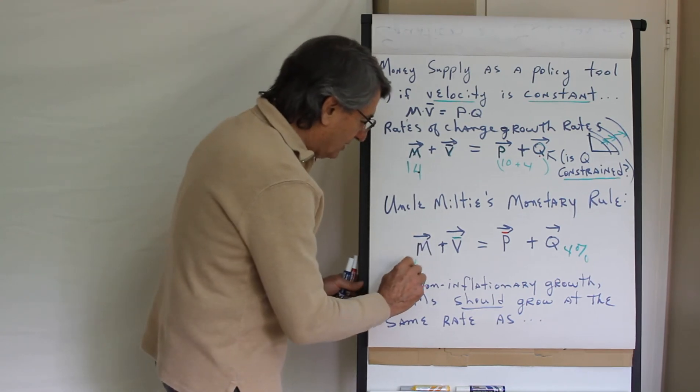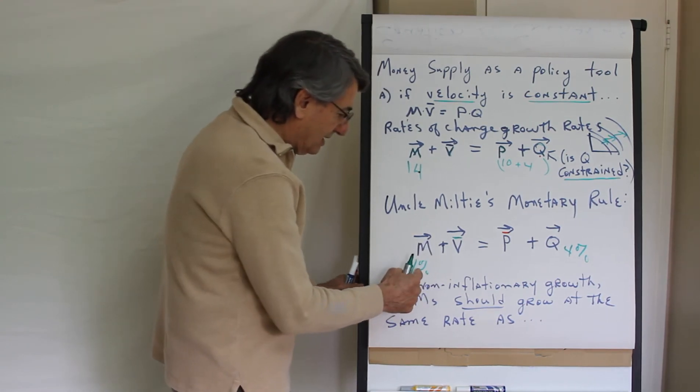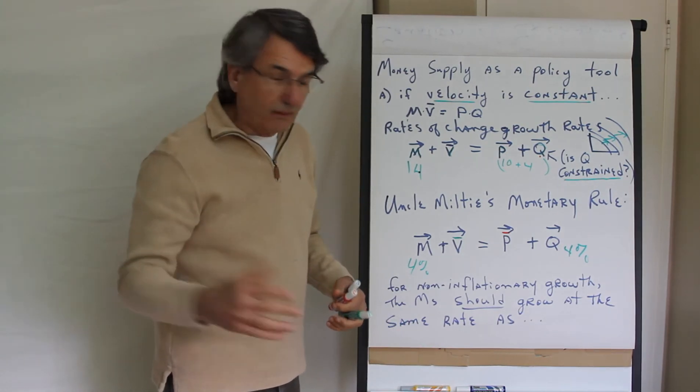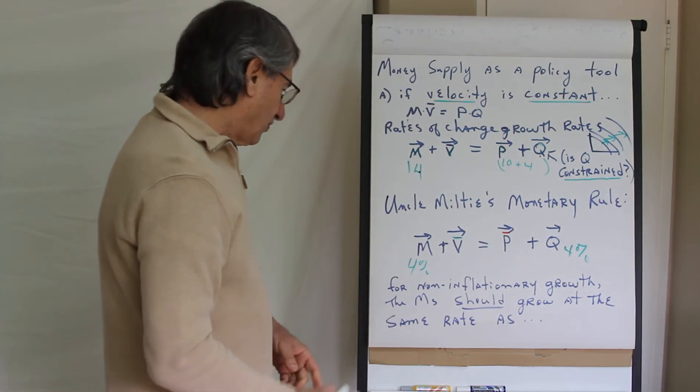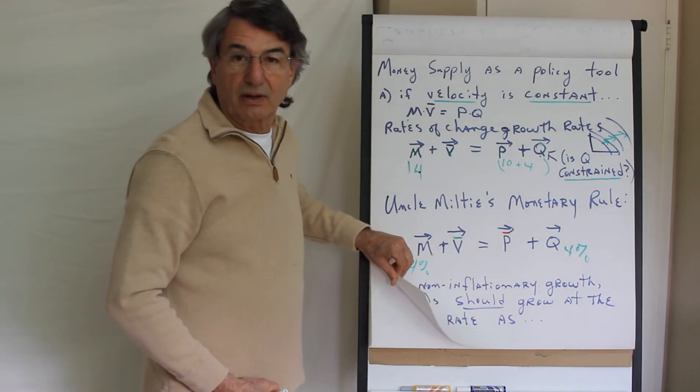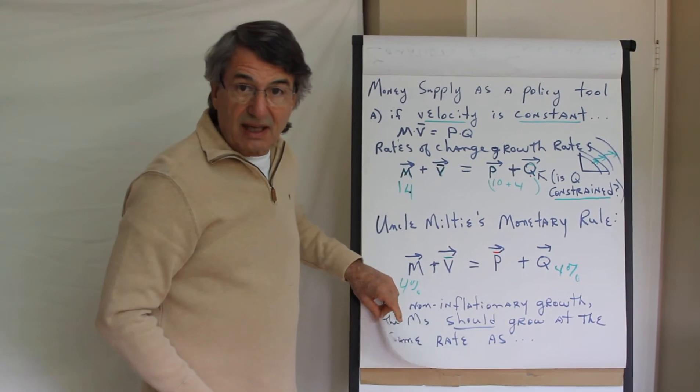The answer is of course 4%. The money supply should grow at roughly the same rate as the growth of real GDP in the economy in order to have non-inflationary growth.